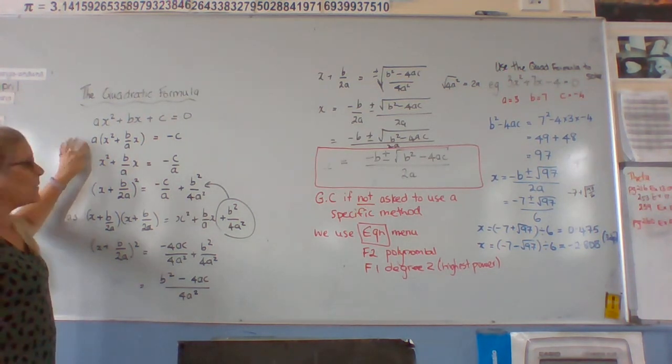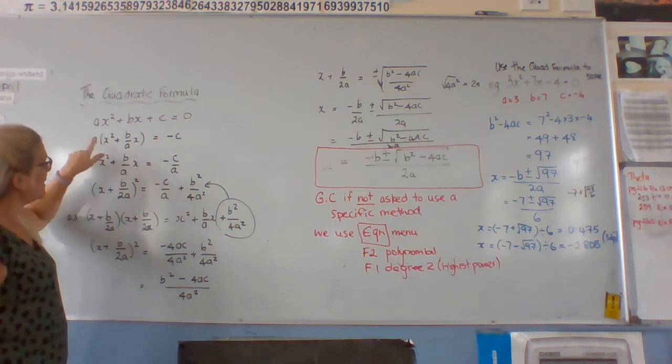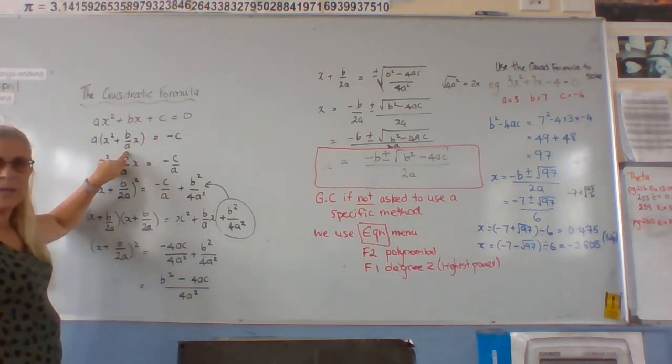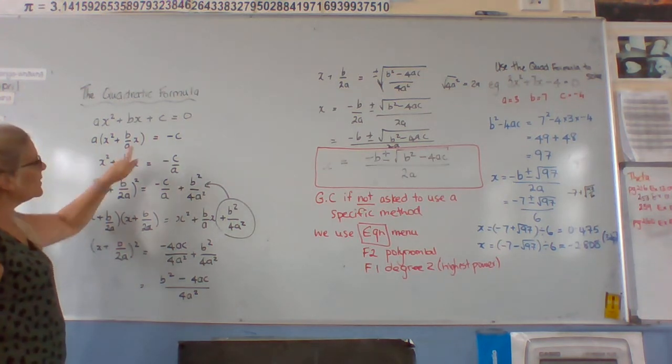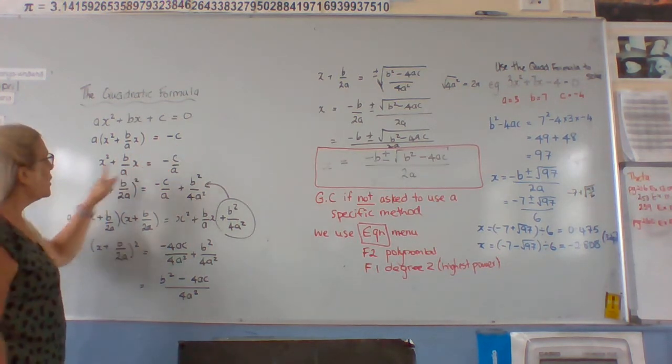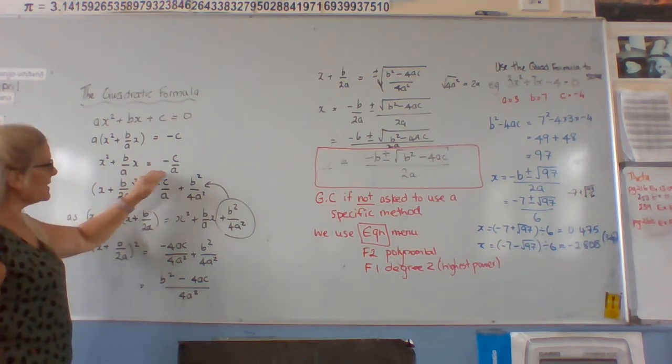So first of all, like yesterday, we take a out of the first two parts. So when we take a out of this one, because it didn't have an a, we have to divide by a. Once we've done that, we've moved c over to the other side. We want to divide, so we get this line here.